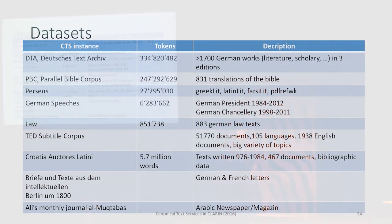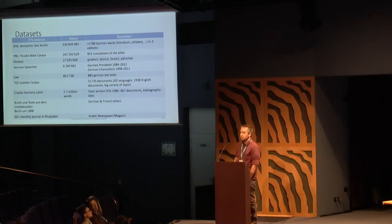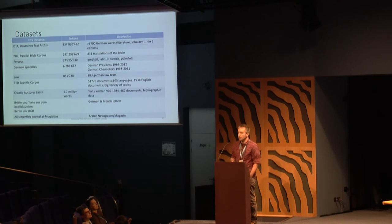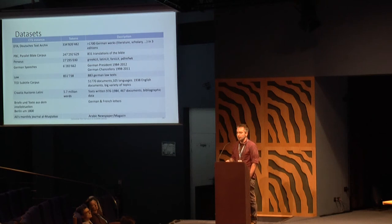These are the data sets that are currently included. The Deutsche Text Archive is probably well known in this audience. Another data set, the second biggest as far as I know, is the parallel Bible corpus, which contains more than 900 translations of the Bible.